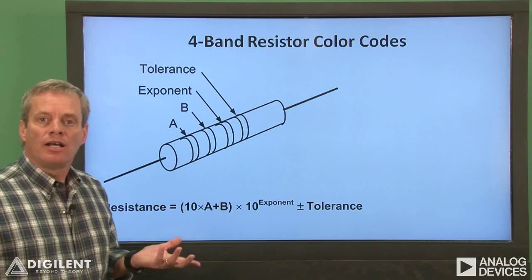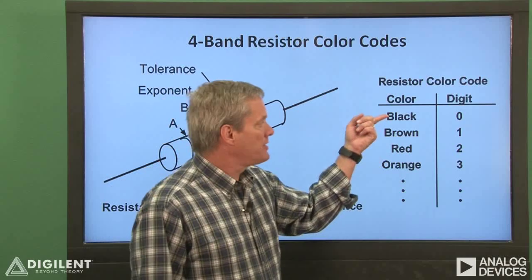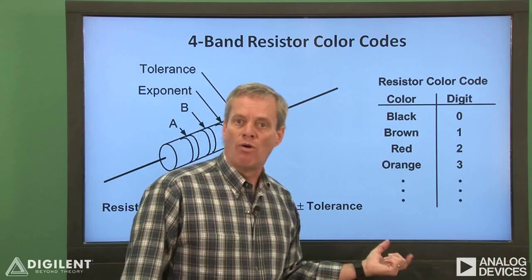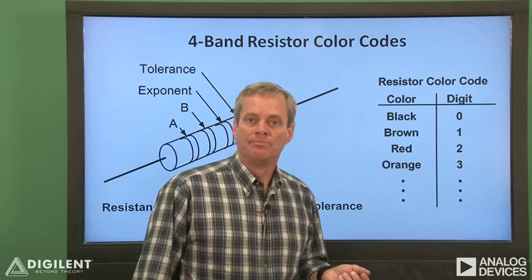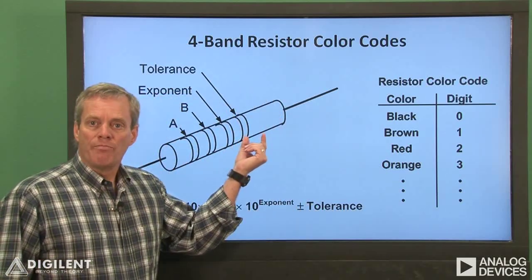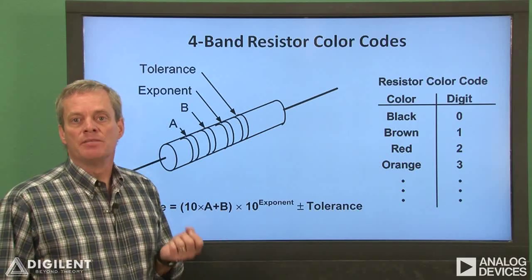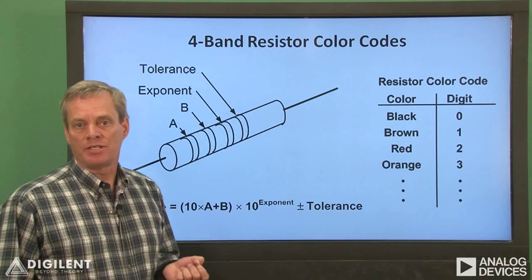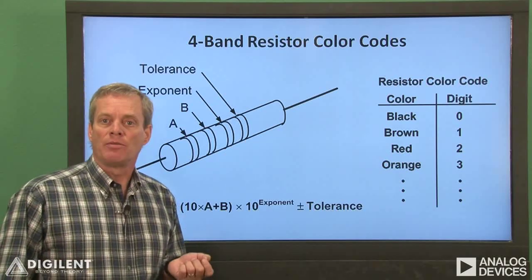Different colors correspond to the digits 0 through 9. Black is 0, brown is 1, red is 2, and so on. A complete table is provided in the text. The fourth band is tolerance — a number which provides the maximum error between the expected and nominal resistance of the resistor as a percent of the nominal resistance.